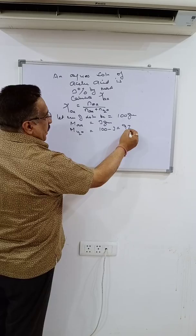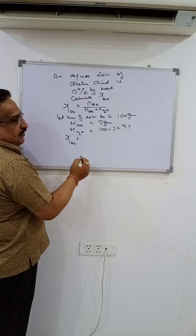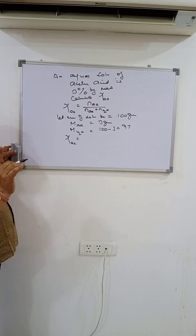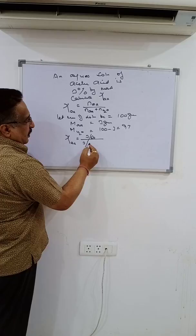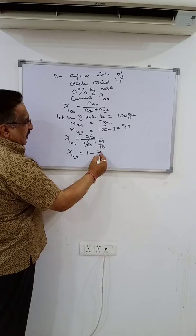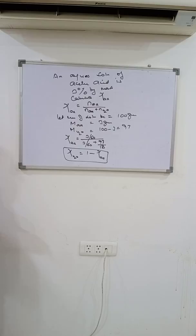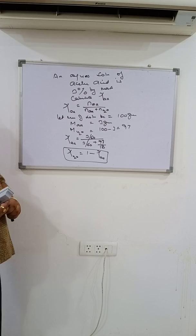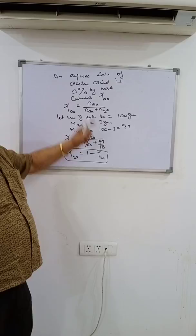The mole fraction of acetic acid equals number of moles of acetic acid divided by total moles. Number of moles is mass upon molar mass. The molar mass of acetic acid is 60, so that will be 3/60, divided by 3/60 plus 97/18, where 18 is the molar mass of water. And chi of water equals 1 minus chi of acetic acid. The key is to understand that percent by mass means you assume total mass of solution as 100 grams.